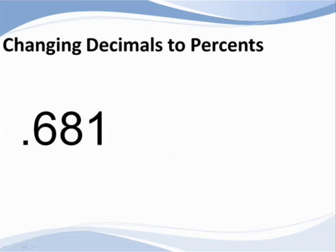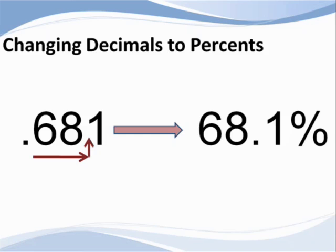Changing a decimal to a percent is really a very easy process. It is a matter of moving the decimal point two places to the right and then adding the percent symbol to remind ourselves that the decimal has been moved. So, for the number on the screen, 681 thousandths is 68 and one-tenth percent. Easy, no?